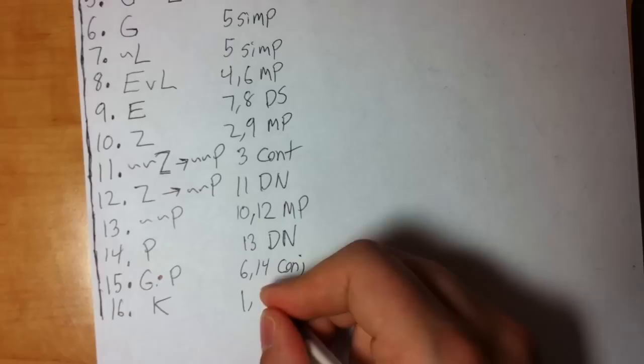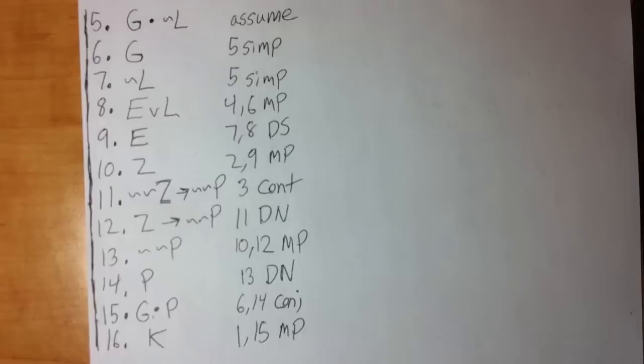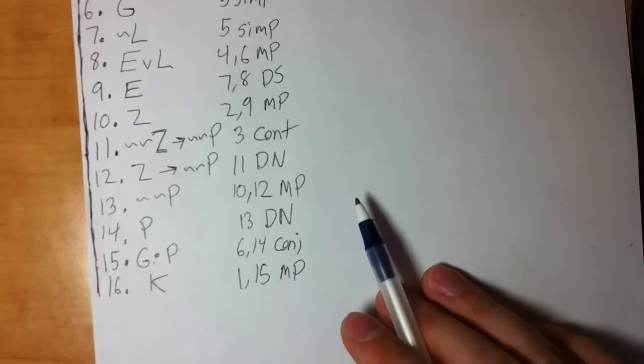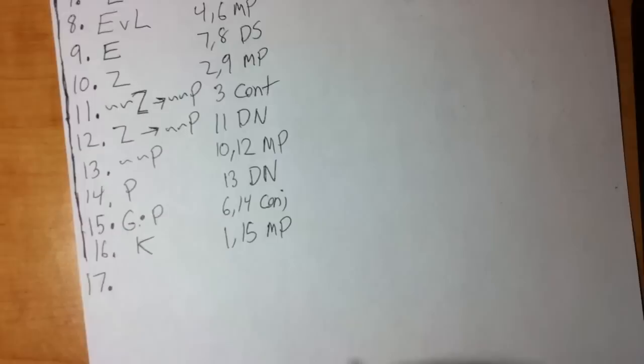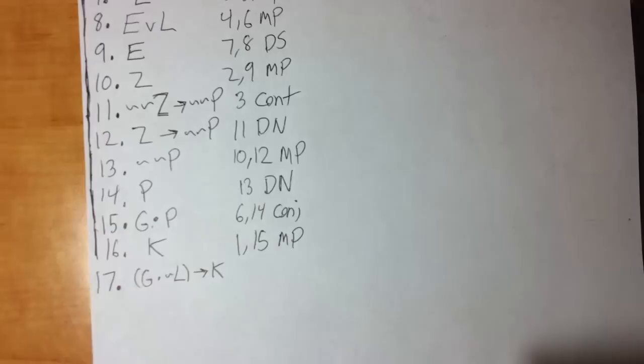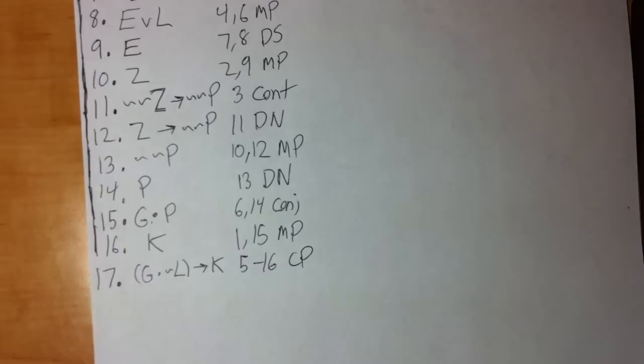That lets me use modus ponens to finally get K on line sixteen — lines one and fifteen, MP. That was a long way to get the right side, but essentially all it is: start by assuming the left, work the proof until you get the right, then stop the assumption line and reform the arrow. So step three: reform the arrow as (G dot tilde L) arrow K, noting it as lines five through sixteen, CP.